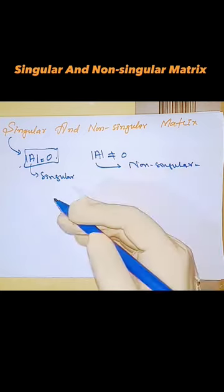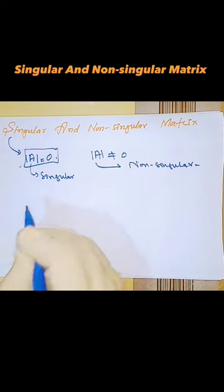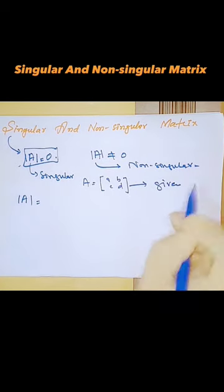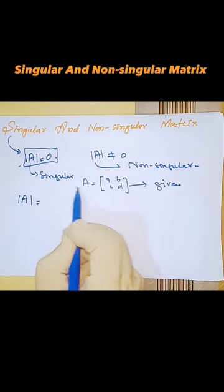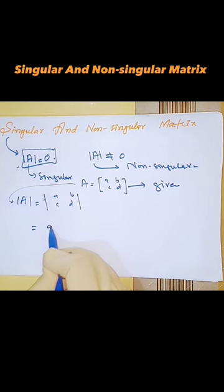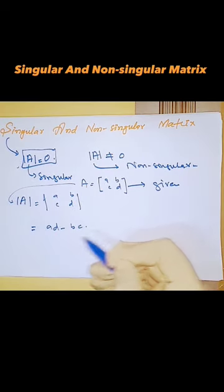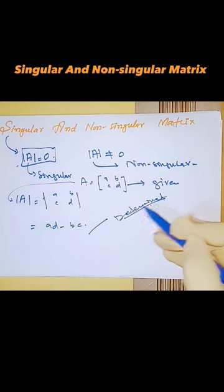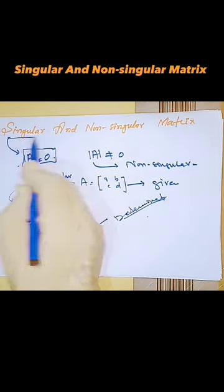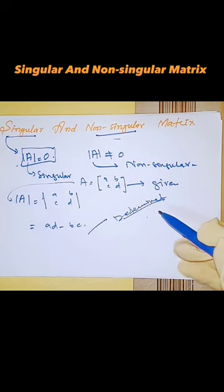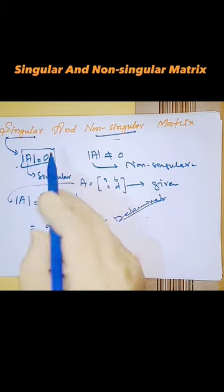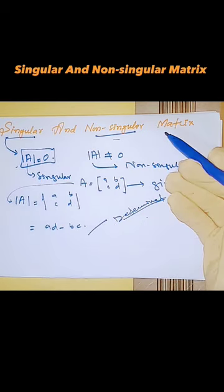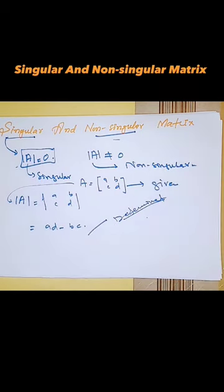It is very easy to find whether a matrix is singular or non-singular. We find the determinant of the given matrix by multiplying the diagonal elements and subtracting the product of the secondary diagonal elements. Using this method, when the determinant is equal to zero, the matrix is singular; when the determinant is not equal to zero, the matrix is non-singular.